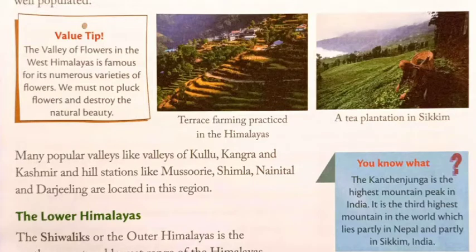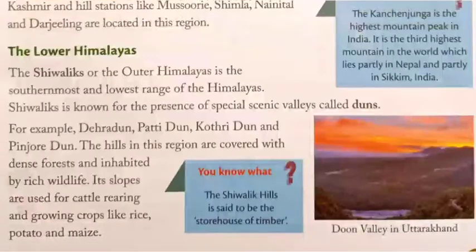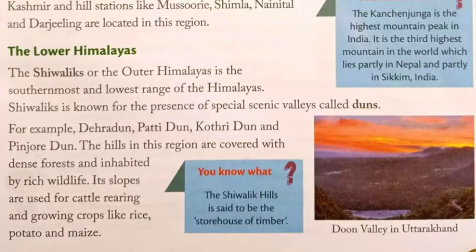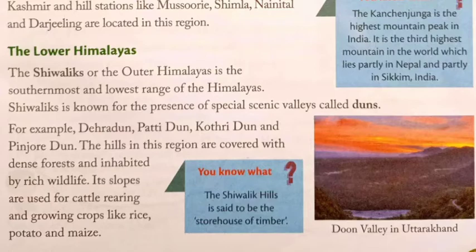Did you know? Kangchenjunga is the highest mountain peak in India. It is the third highest mountain in the world, lying partly in Nepal and partly in Sikkim, India. The Shivaliks or the Outer Himalayas is the southernmost and lowest range of the Himalayas. The Shivaliks are known for the presence of special scenic valleys called duns. For example: Dehradun, Patlidun, Kotridun and Pinchodun.